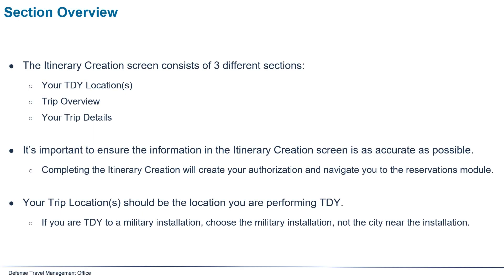The itinerary creation screen consists of three different sections: your TDY location or locations, trip overview, and your trip details. It's important to ensure the information in the itinerary creation screen is as accurate as possible. Completing the itinerary creation will create your authorization and navigate you to the reservation module.